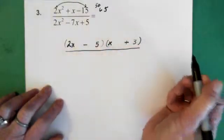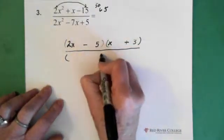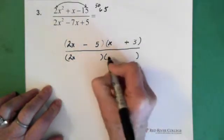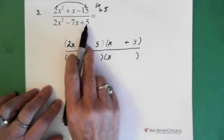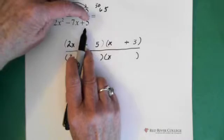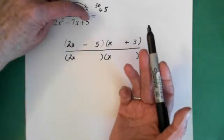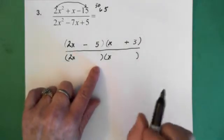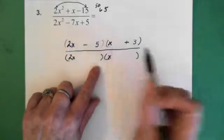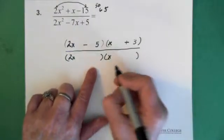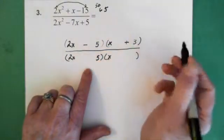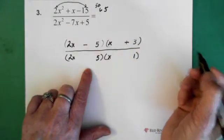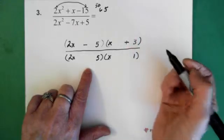Now for our denominator. Again, 2 brackets, 2x here, x here. For the 5, the only option is 5 and 1. But where are we going to put that 5? We need them to add up to -7. So I'm assuming that the 5 goes here and the 1 goes here.